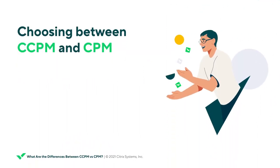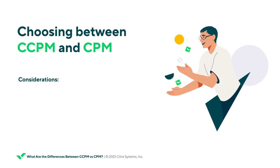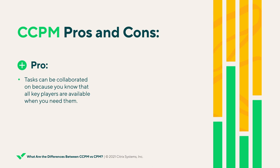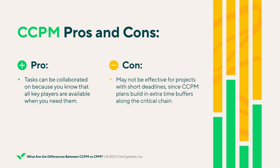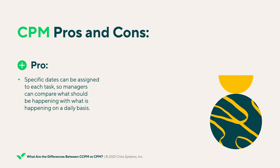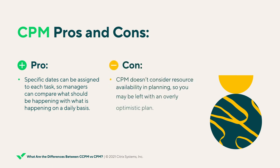So when should you choose CPM or CCPM? There are two main considerations: flexibility and resource availability. CCPM is a better choice when there is flexibility in the start and/or end dates of activities and when there is a guarantee of resources — staff, equipment, or space. CCPM is not a good choice for projects with short deadlines, since CCPM requires that time is added to the schedule. CPM, on the other hand, is better for projects with short deadlines because it relies on more rigid scheduling and assumes resources will be available. However, that means CPM can sometimes result in overly optimistic planning.